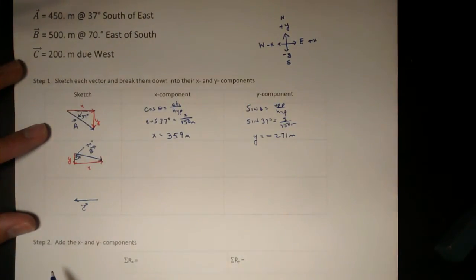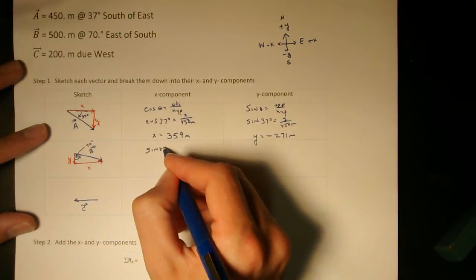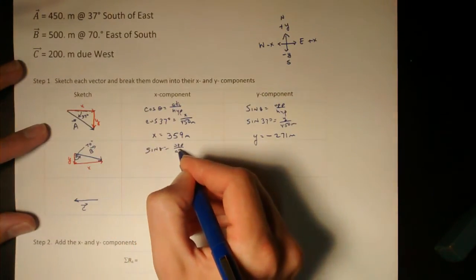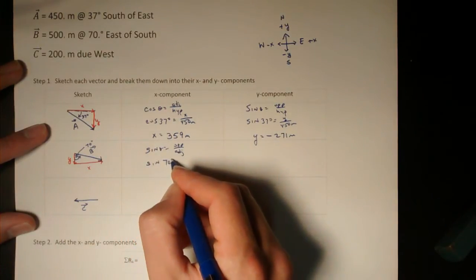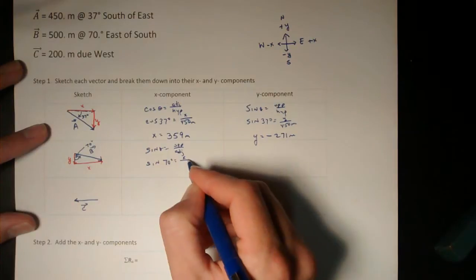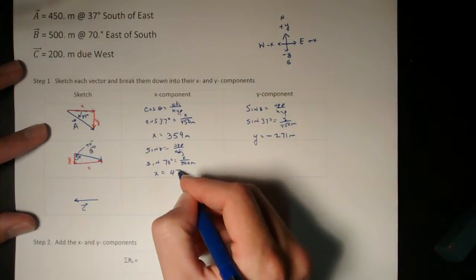For vector b, notice the x component is opposite the angle. So I'll write sine theta equals opposite over hypotenuse. So sine of 70 degrees is equal to the x component over 500 meters. And the x component of vector b is 470 meters.